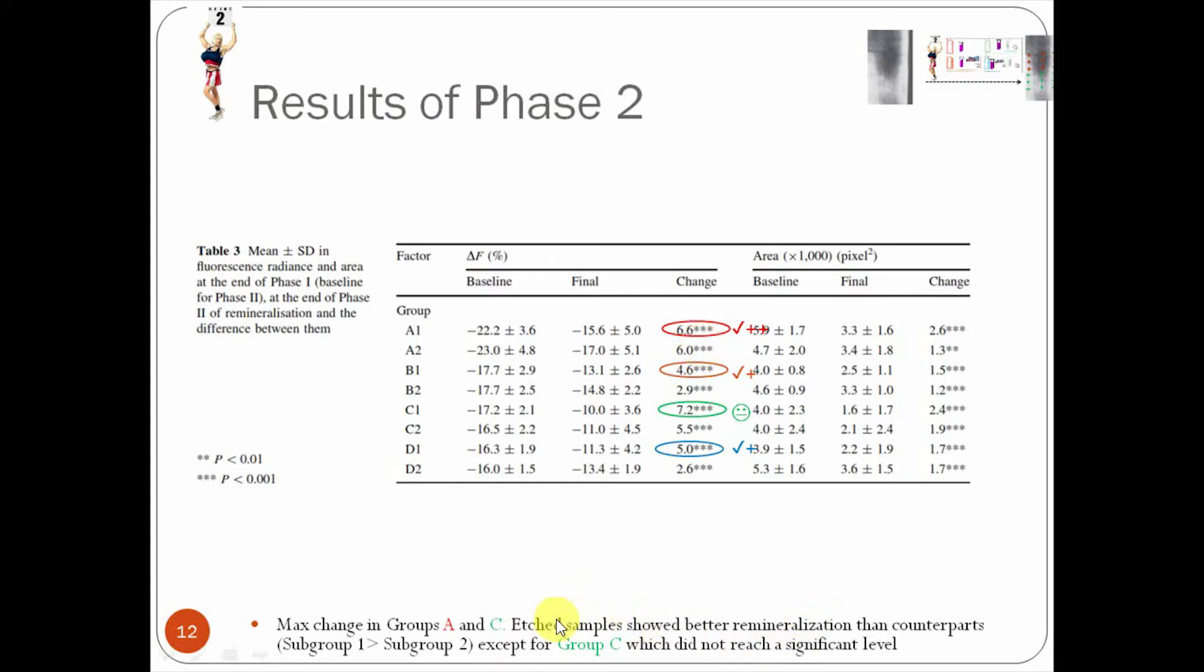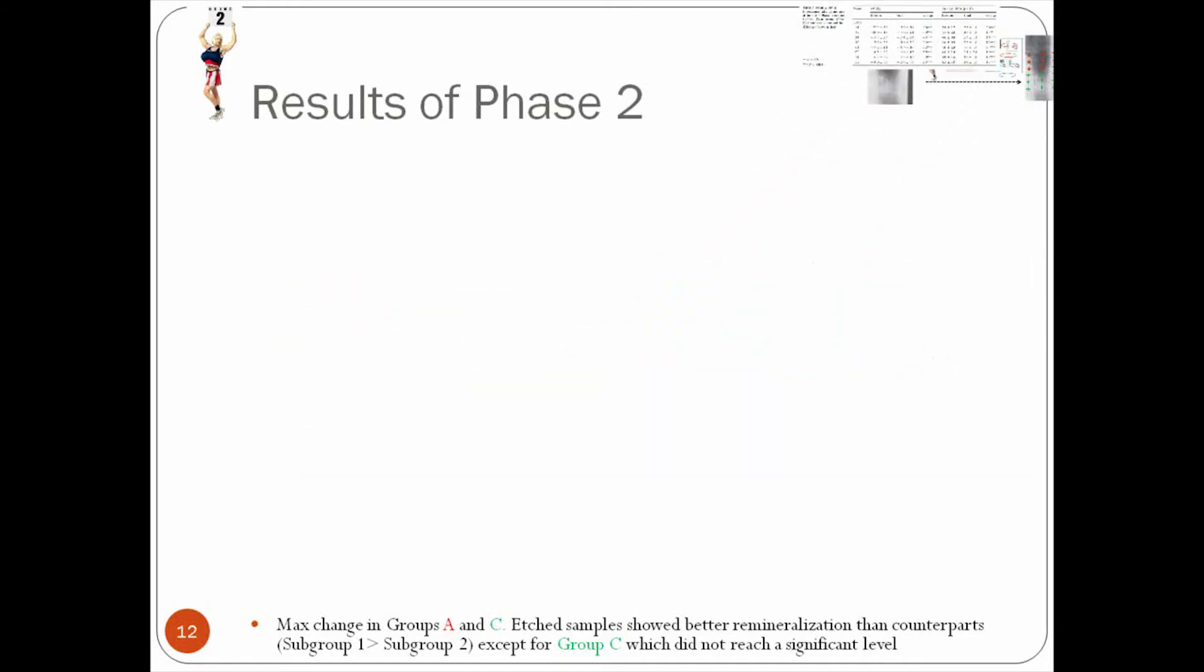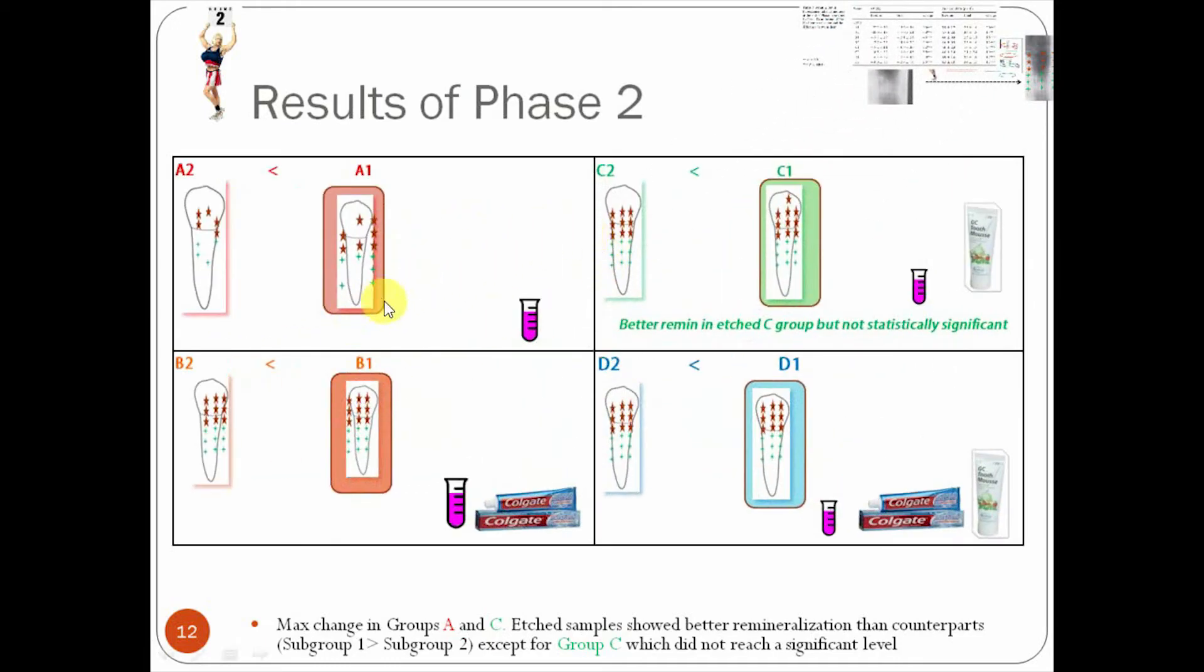However, they said here that the etched samples showed better remineralization rate than counterparts except for group C, which did not reach a significant level. So the difference that we see between C1 and C2, it's not that different. So this is just a reminder. It's saying that we do get better remineralization rates in the subgroups, meaning that the A1, which had 20, and the A2, which had 10. Remember, the A1 was the one that underwent acid remineralization. We do see an increase in the remineralization rates.